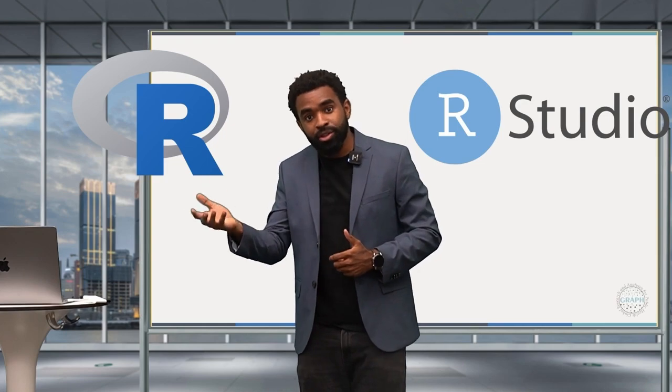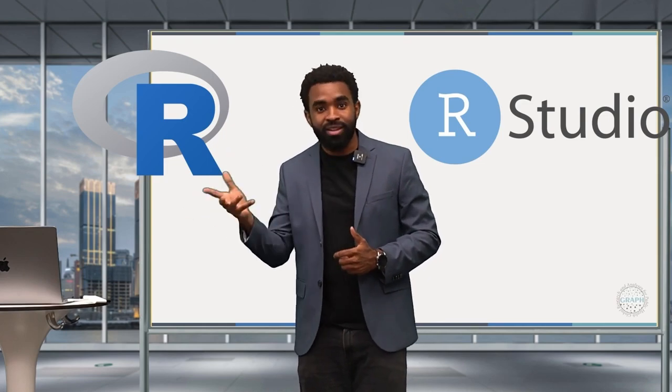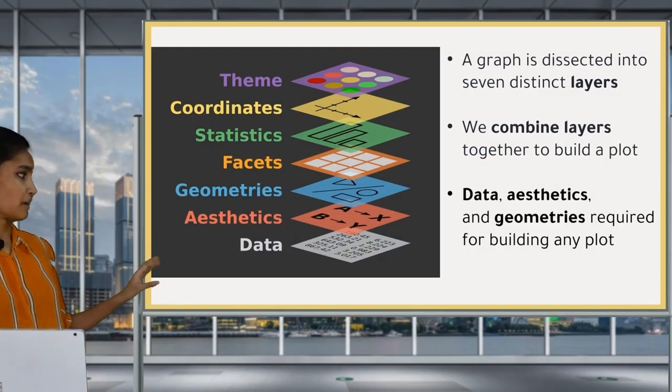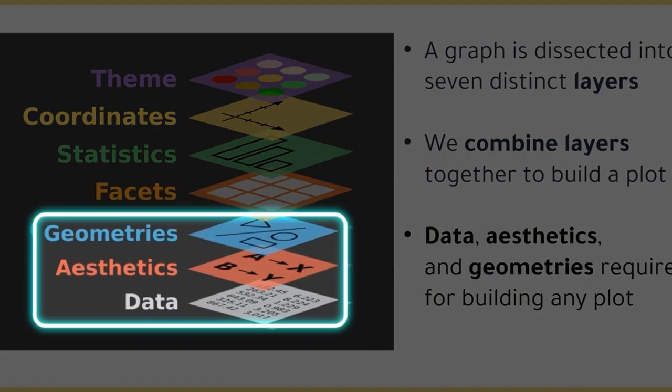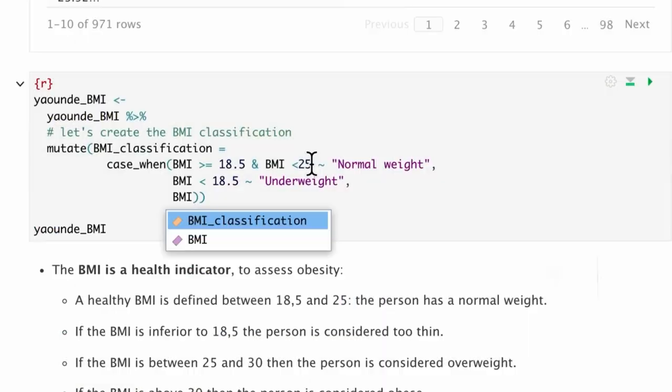R is the programming language you're going to use to write code. These three components — data, aesthetics, and geometries.